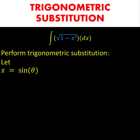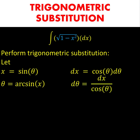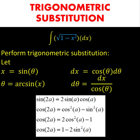First, we let x be equal to sine of theta, and dx is equal to cosine theta d theta. Also, from x equals sine theta, it follows that theta is equal to sine inverse of x, or theta is equal to arcsine of x. Solving for d theta, we have d theta equals dx over cosine of theta.